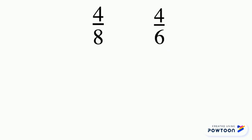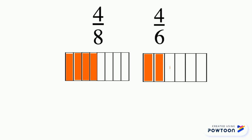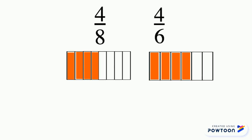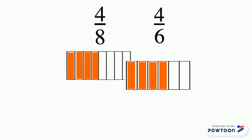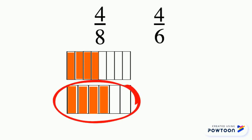Let's look again at the visual models to prove this. We make two models that are the same size. Four eighths has eight units, and we shade four of them. Four sixths has six units, and we shade four of them. The key idea here is to see what the denominator is telling us — eighths are smaller than sixths because the more you have to split up a whole, the smaller the pieces become. When we compare the same size visual models, we see that four sixths is bigger than four eighths. So we write four eighths is less than four sixths, or we write the inequality symbol pointing to four sixths because it's bigger.